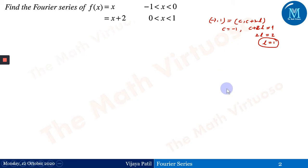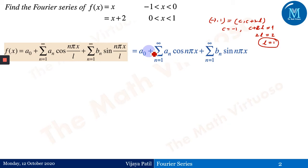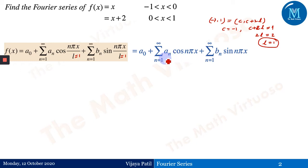We have the value of l equals 1. So the Fourier series f(x) equals a₀ plus summation aₙ cos(nπx/l) plus summation bₙ sin(nπx/l). After putting l equals 1, the series becomes a₀ plus summation aₙ cos(nπx) plus summation bₙ sin(nπx). This is the series when the interval is minus 1 to 1. If the interval were minus 5 to 5, l would equal 5; if minus 3 to 3, l would equal 3.